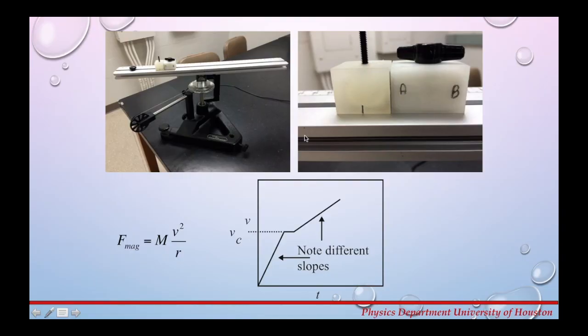This block is then given angular acceleration by applying the torque simply by releasing this rotating platform. When the product mv squared over r reaches a maximum centripetal force provided by the magnetic force this block will break away from the magnet and move along the track until it hits this stop sign.